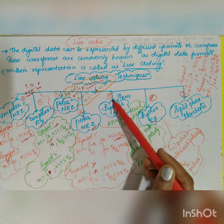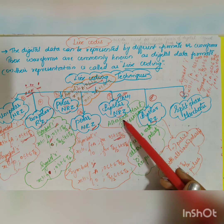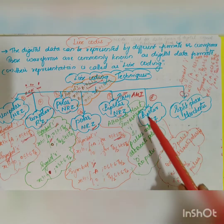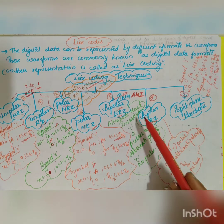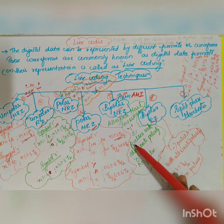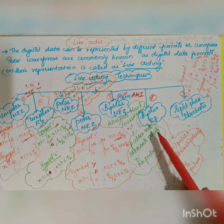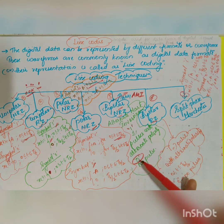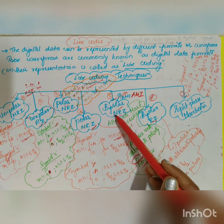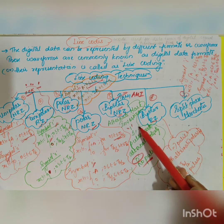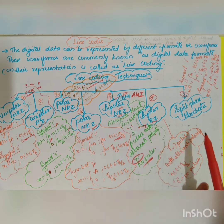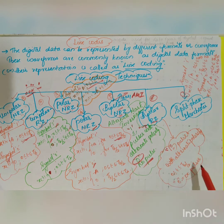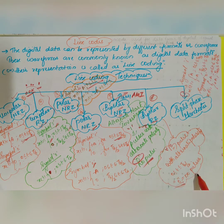Bipolar non-return to zero is also called alternate mark inversion (AMI). It alternately switches between positive and negative pulses. If you have consecutive ones, the pulses will have alternate polarity — the first one gets a positive pulse, the next one gets a negative pulse, and so on. For symbol 0, there is absence of pulse. For NRZ this applies for the entire duration 0 to Tb. For bipolar return to zero, the alternate pulses are present only for half duration 0 to Tb/2; for the other half, the value is 0. For symbol 0, there is no pulse.